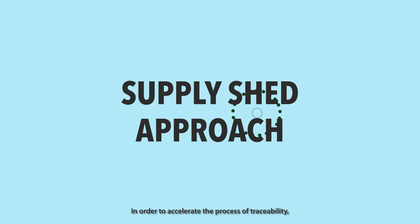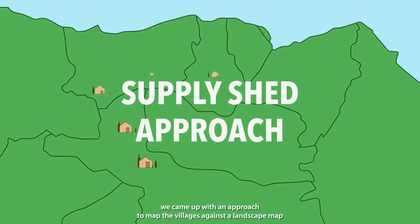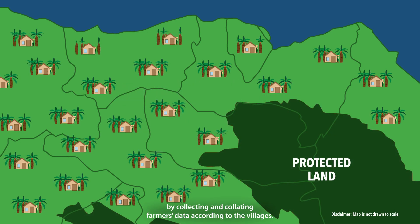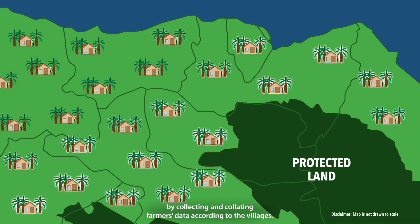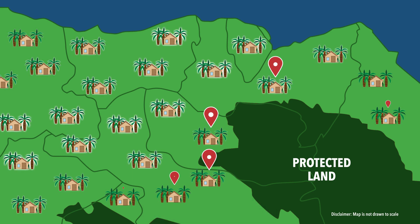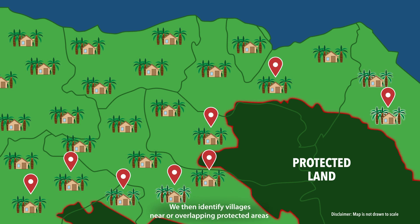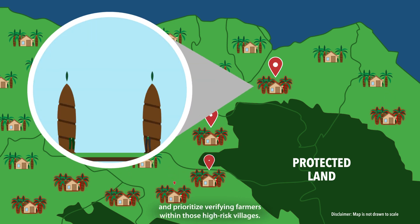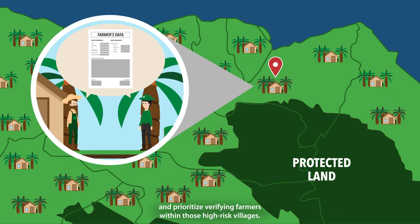In order to accelerate the process of traceability, we came up with an approach to map the villages against a landscape map by collecting and collating farmers' data according to the villages. We then identify villages near or overlapping protected areas and prioritize verifying farmers within those high-risk villages.